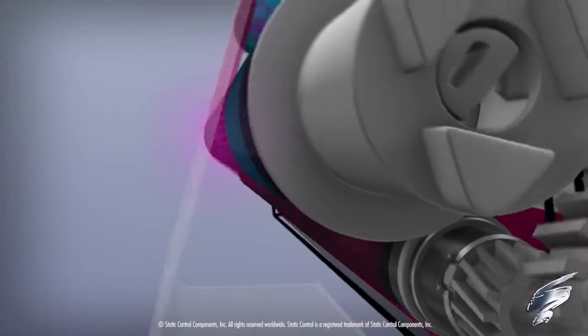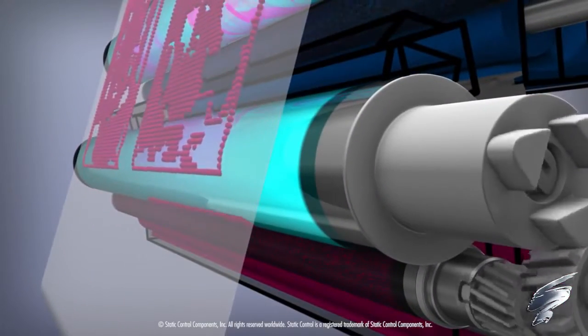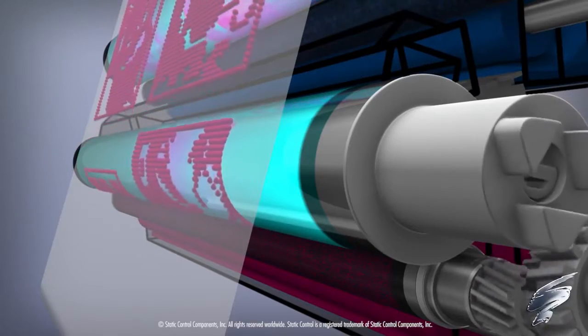The toner on the OPC drum is then transferred to the paper. This process occurs within the four color cartridges in every laser printer.